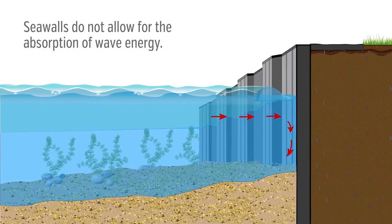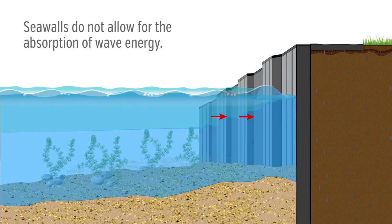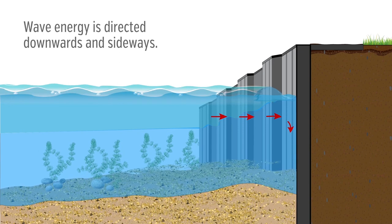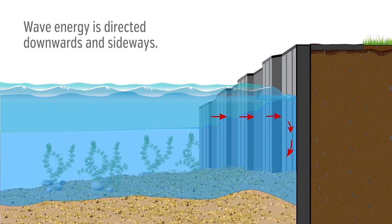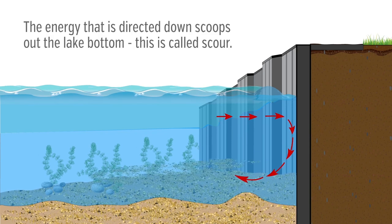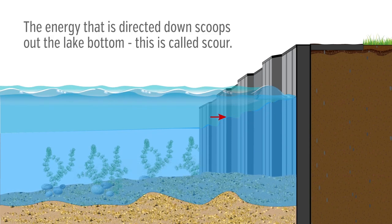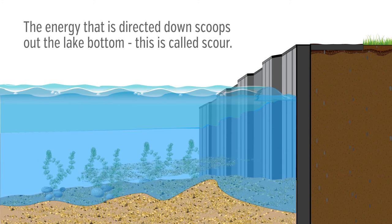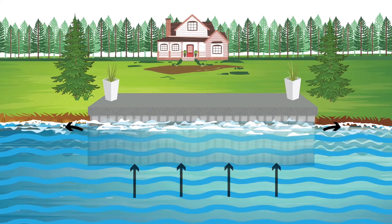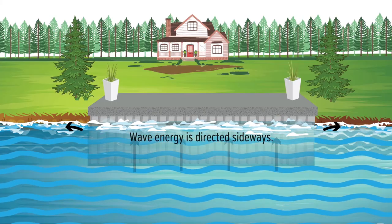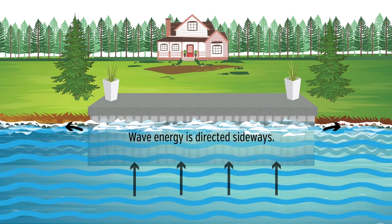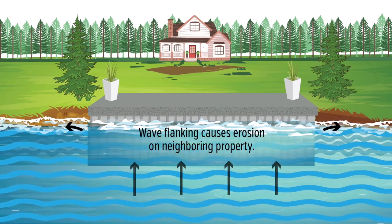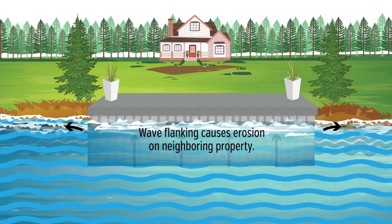Sea walls can also create erosion problems. As waves pound against the seawall, the wave energy doesn't disappear. The energy deflected downward scours the lake bottom, which damages fish spawning areas, removes fish food, and stirs up bottom sediments. The sideways energy causes what is known as wave flanking. This causes erosion on neighboring properties, which can then result in more seawalls.